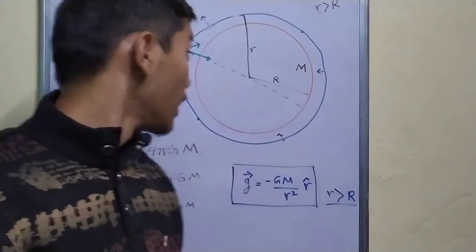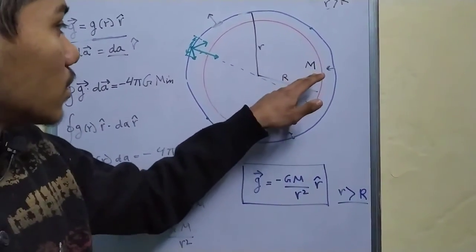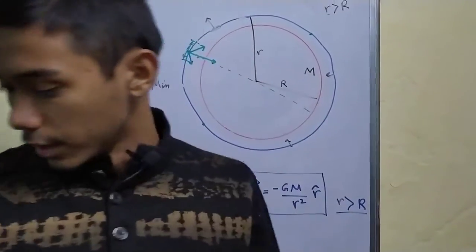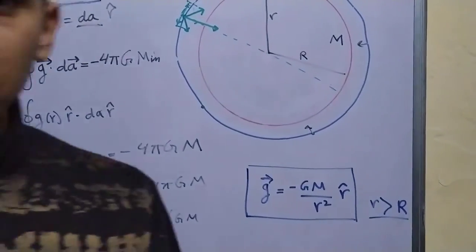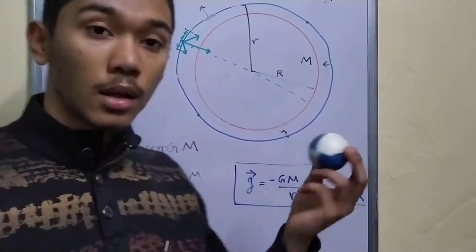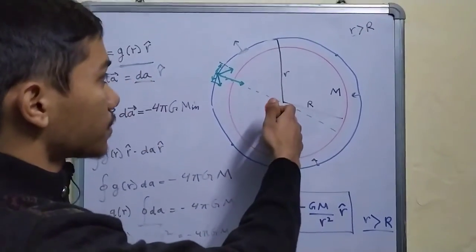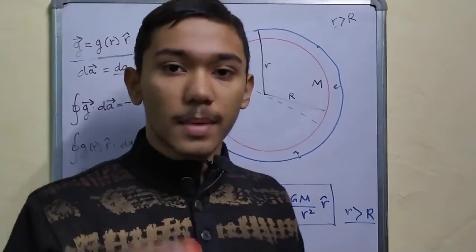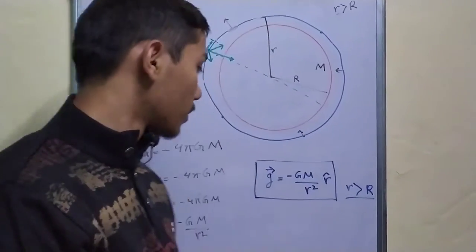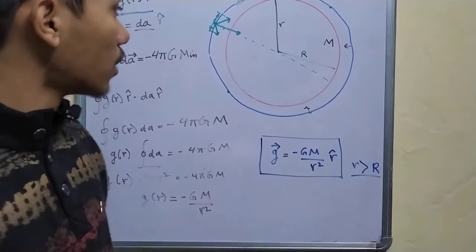Another interesting fact is that we haven't said anything about the nature of this spherical body. It can either be a solid sphere or a hollow sphere. As long as we are outside the sphere, it doesn't matter. It doesn't matter if it's a solid sphere or a hollow sphere. All of them will behave just like a point mass as long as you are outside the sphere.